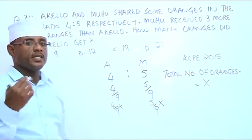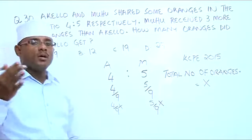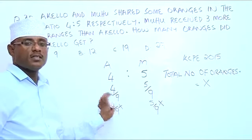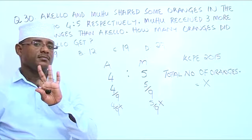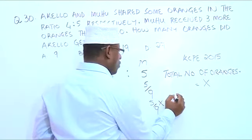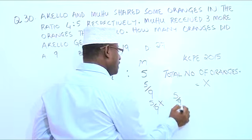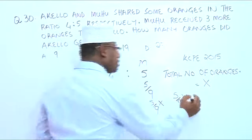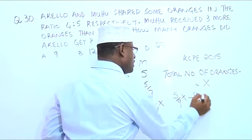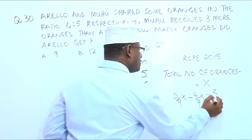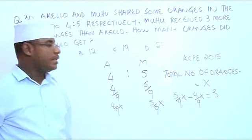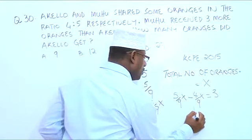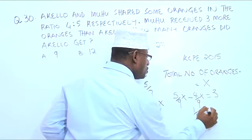The question has told us that Muhu got 3 more. Meaning, whatever Muhu got — 5 over 9 of the total number of oranges — if you subtract what Akelo got — 4 over 9 of the total number of oranges — you will get 3. So, 5 over 9 minus 4 over 9 times X gives us 1 over 9 X, which equals 3.